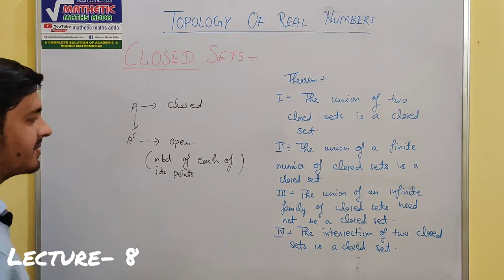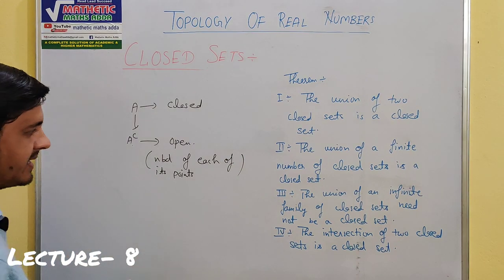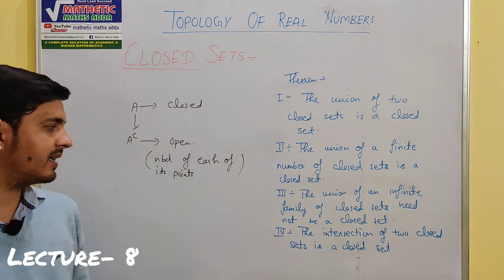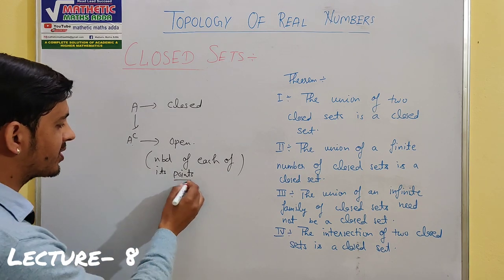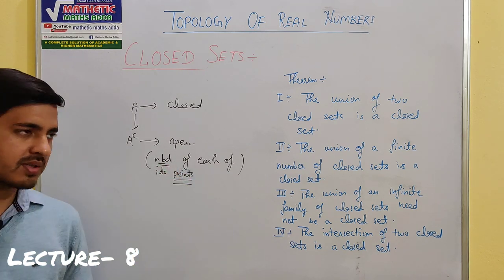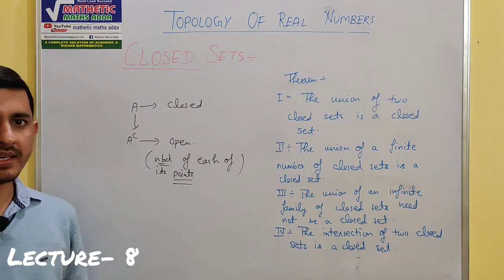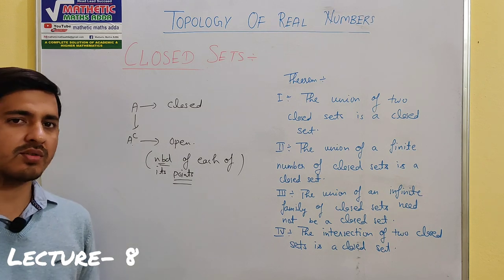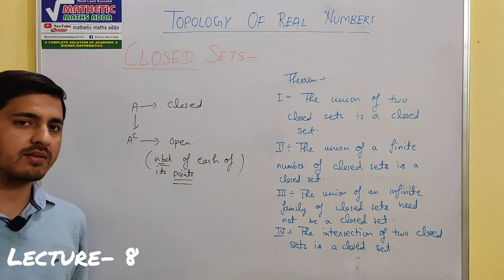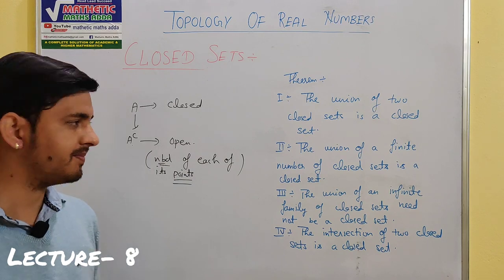If any set is open, it means every point is contained in a neighborhood, and then the set is open. If any set is open, then its complement is closed. If any set is closed, then its complement is open.